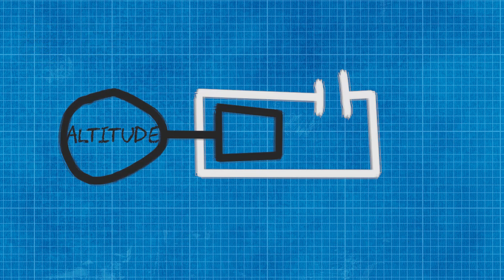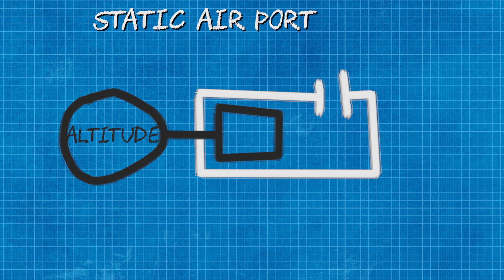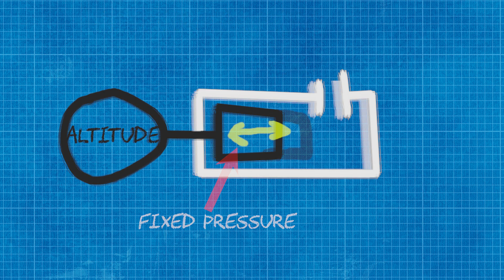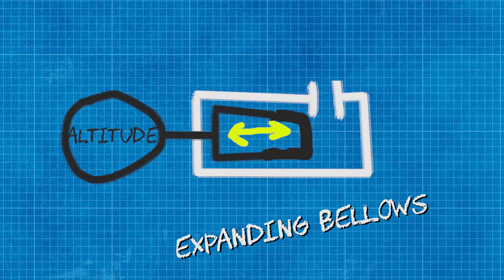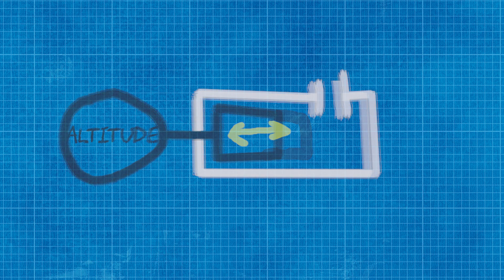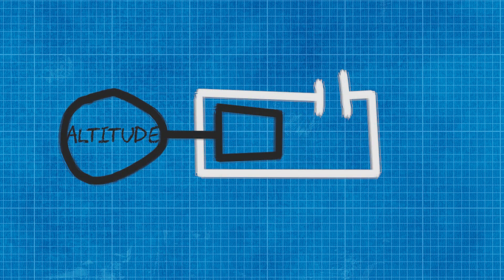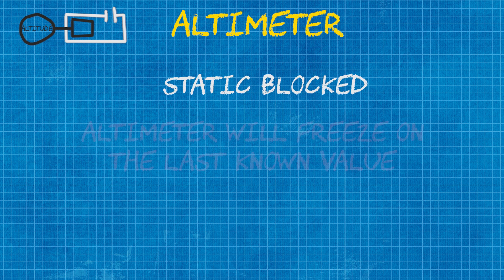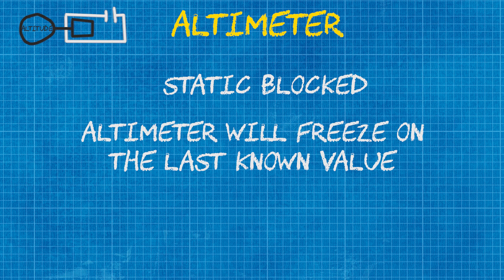An altimeter works by comparing static air pressure to a fixed air pressure inside the bellows. As we climb, the bellows will expand, and as we descend the bellows will contract. This is measured and put through some calibrated gears, then displayed on our altimeter. If the static pressure vent gets blocked on the altimeter, then the altimeter will just freeze and will not display whether we are climbing or descending — it will freeze at the value it was last at.